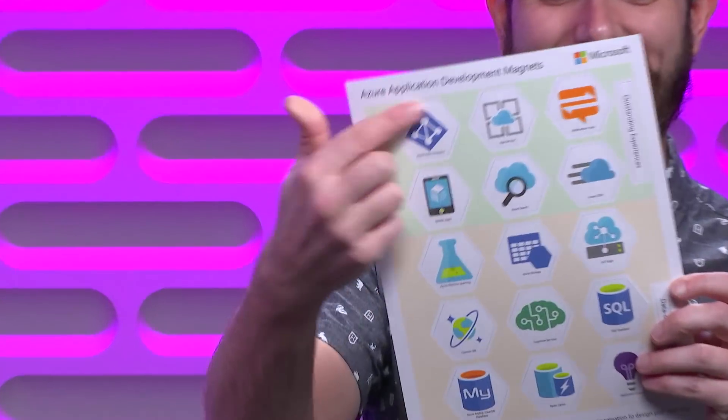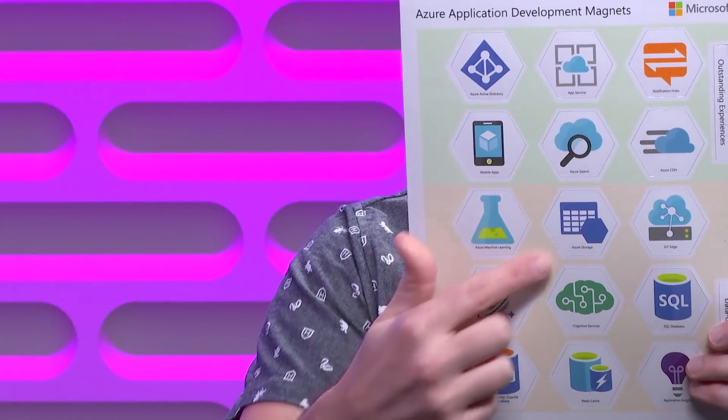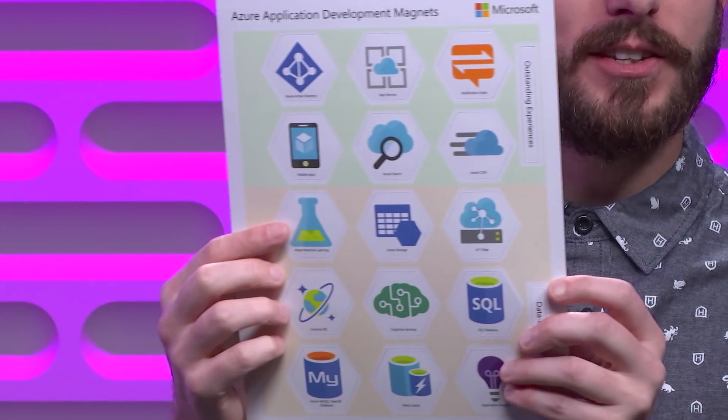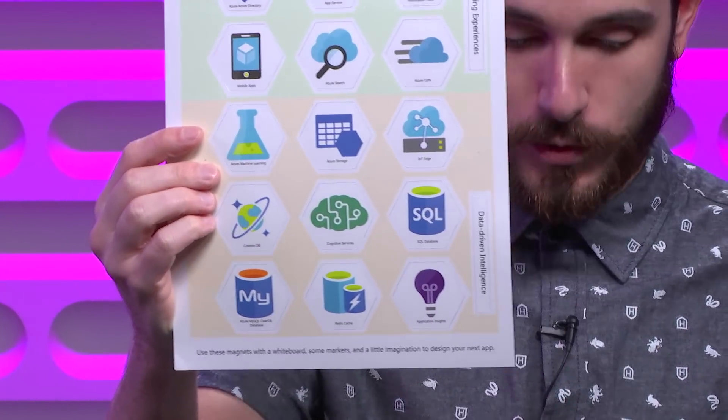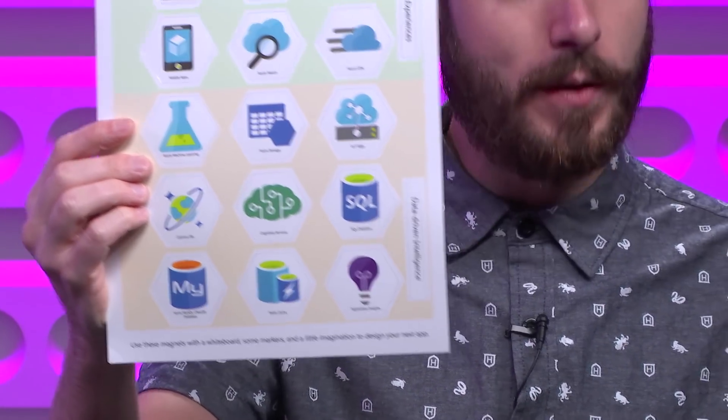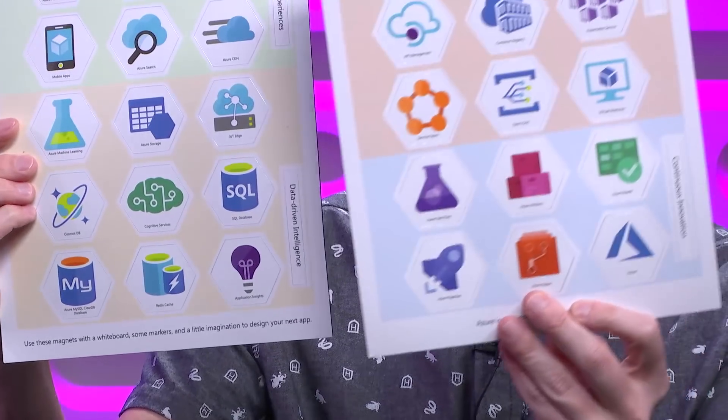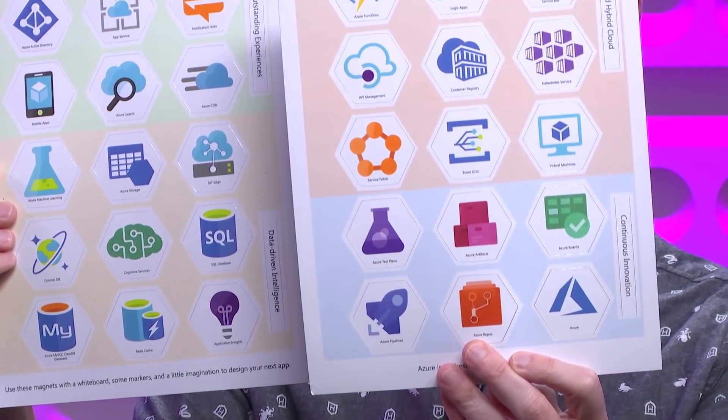We can zoom in on these — they are all different services in Azure. You have two sets. We have so many services, we have two different sets. So what you're saying is you can put this on the board and architect it out, and then how would you even go about deploying it?